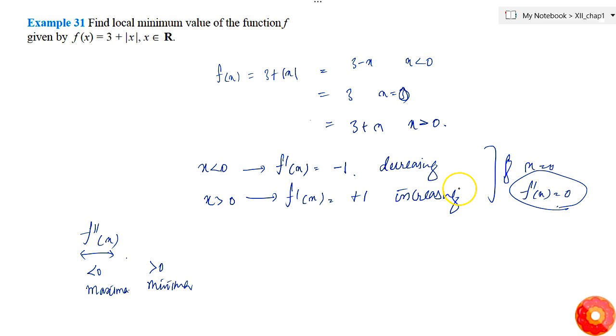Here, f'(x) = 0 at x = 0, and the function is decreasing initially then increasing after that point. Therefore, x = 0 is a local minimum.